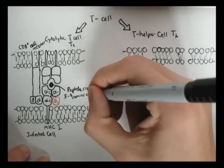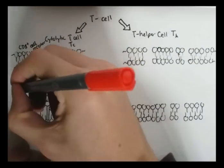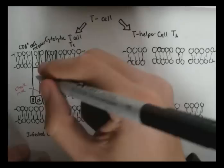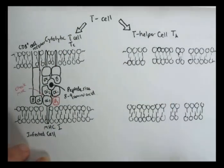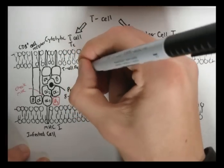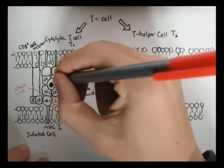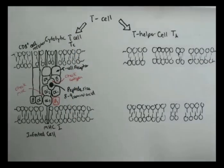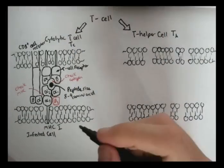Now it should be noted that the peptide size being presented on the MHC class 1 are usually about 8 to 9 amino acids, fairly small, and it is tightly bound. And if that's all okay, the infected cell will die.